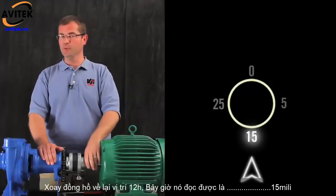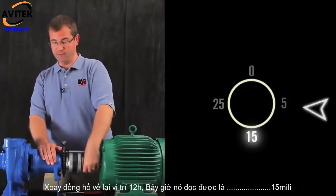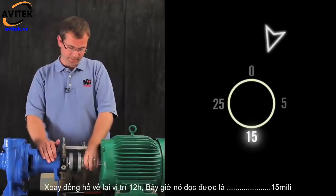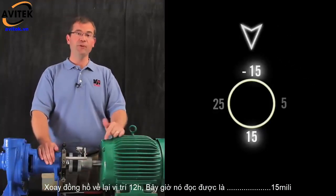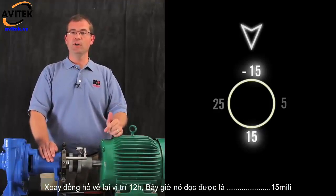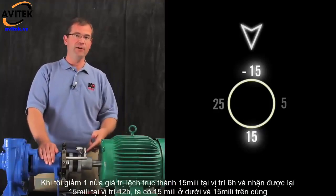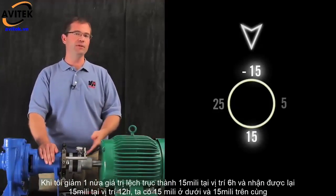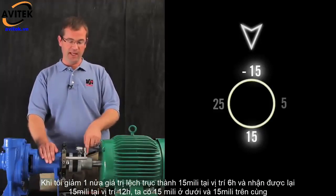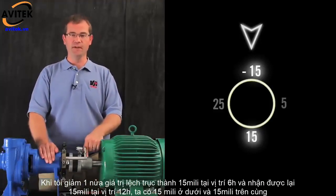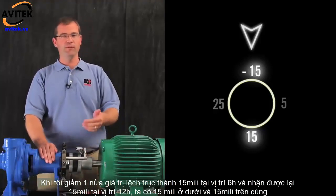Now, if I roll the dial back to 12 o'clock, do you think it will still read zero? Well, let's see. No, it reads 15 mils. Since I set the value to 15 mils at a 6 o'clock position, it also reads the True Position at the 12 o'clock position. 15 mils at the bottom, 15 mils at the top.